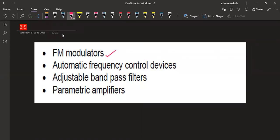Which is used in FM modulators, can also be used in automatic frequency control devices, in adjustable bandpass filters, and also in parametric amplifiers. This is where we can have our varactor diode in application.